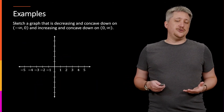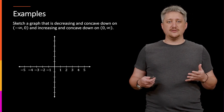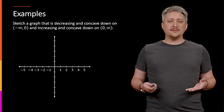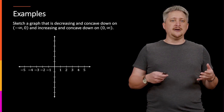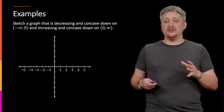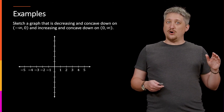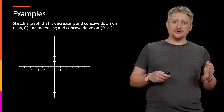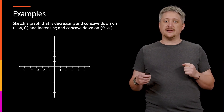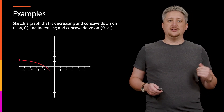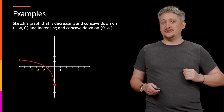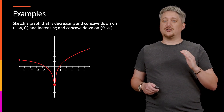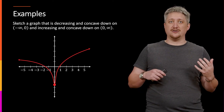Last but not least, it's useful and instructive to try making a graph with certain combinations of these properties: increasing, decreasing, concave up, concave down. For example, if we wanted one that is decreasing and concave down on the left, and then increasing and concave down on the right, we'd be going down while also arcing down more as we approach the y-axis. Then to the right of the y-axis, we want to be increasing but still arcing downward — so we start out going up really fast but then curving downward, keeping it concave down throughout.